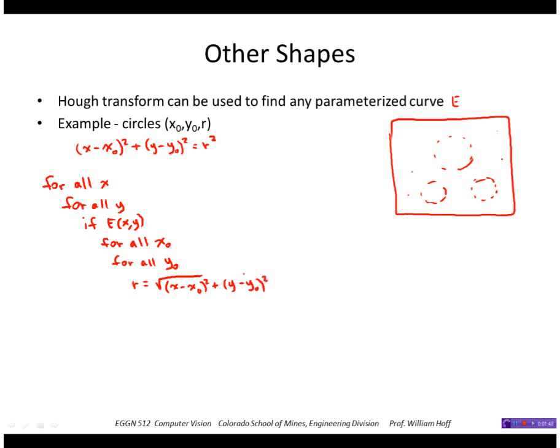So at that point we have a x0, y0, r that could be a circle passing through our edge point.